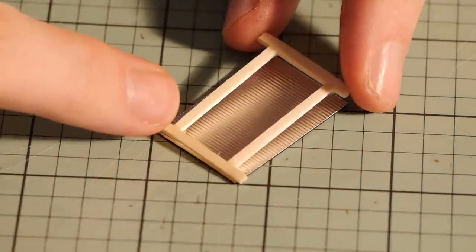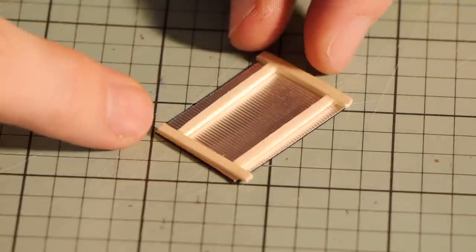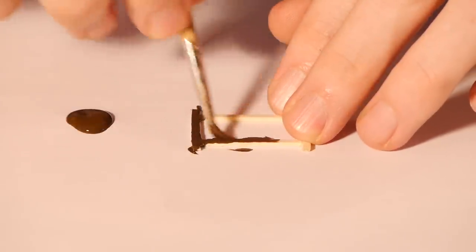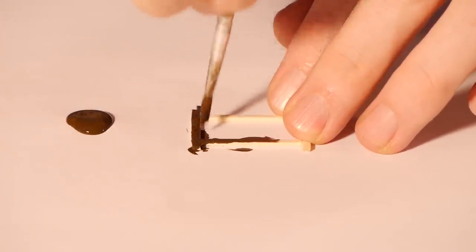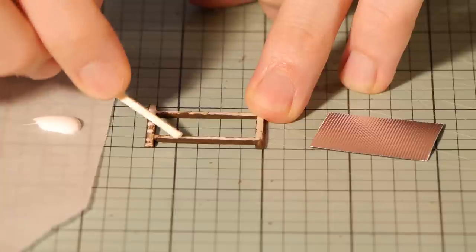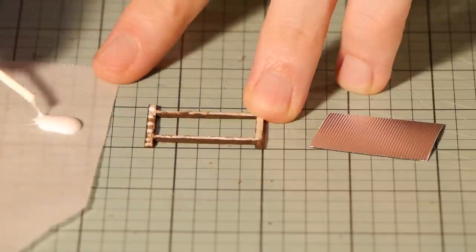A quick test fit shows everything is looking pretty good. Before gluing it all together, I paint the fence frame burnt umber. Just a rough coat is fine, as it will be weathered with pastels later.